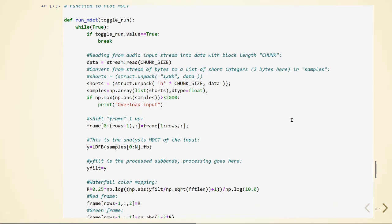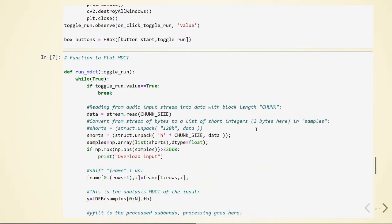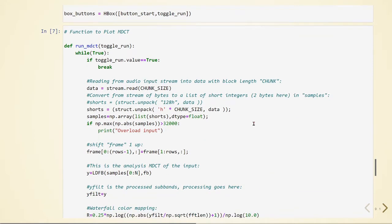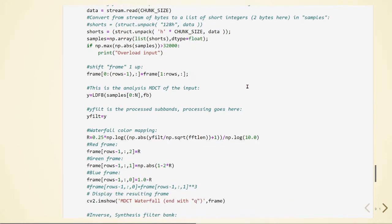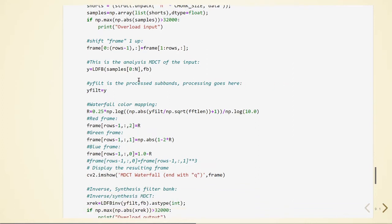And here this is the function that will plot the MDCT using this fast implementation. We read the audio input stream into the data with block length defined by chunk size. Then we convert from stream of bytes to a list of shorts, we prepare our samples in the format that we need. Also, we define our frames to plot the MDCT. Here is the analysis MDCT of the input. We have here our samples and we are taking the blocks from 0 to 1024.